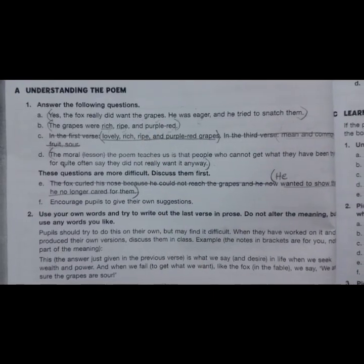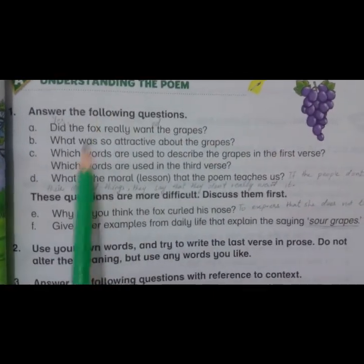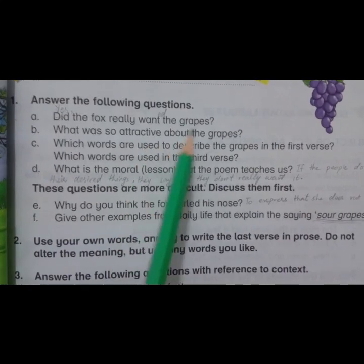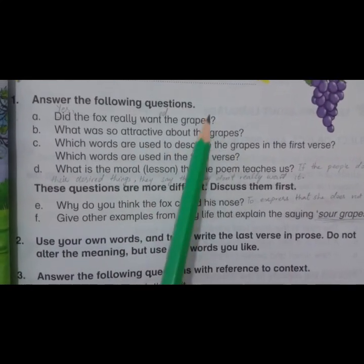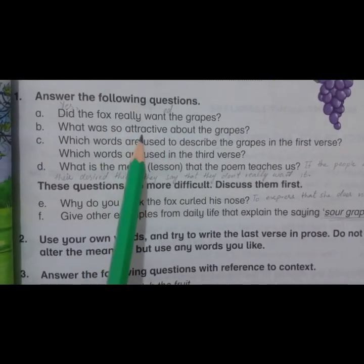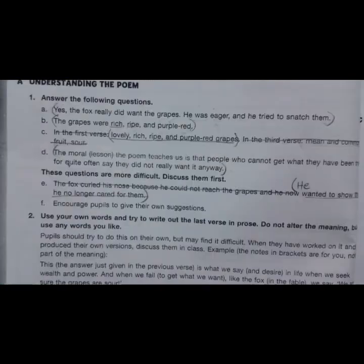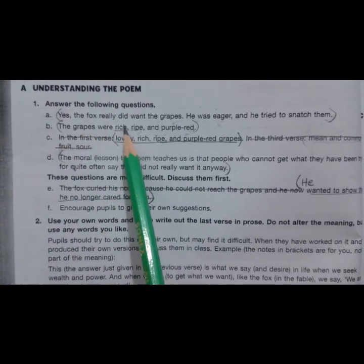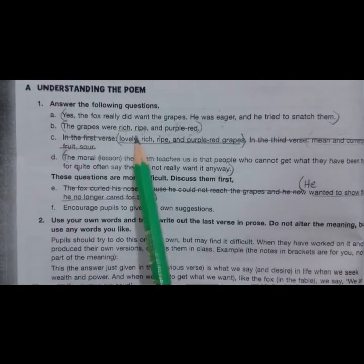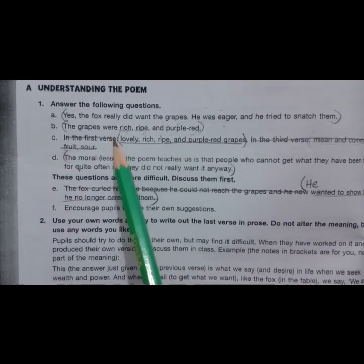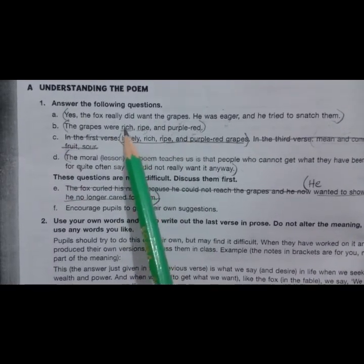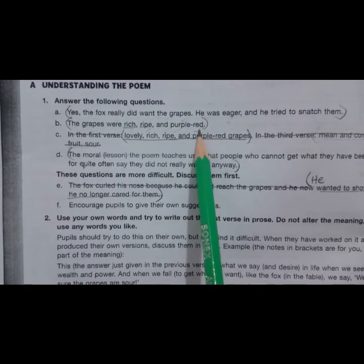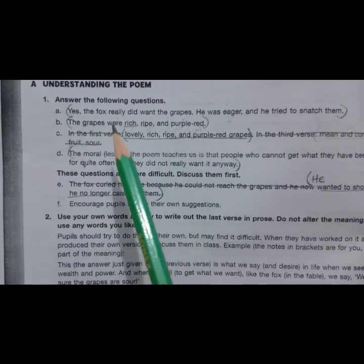Question two: what was so attractive about the grapes? The grapes were rich, ripe, and purple-reddish in color. Because of these qualities — they were so plentiful, ripe, and that rich purple-red color — that's why they were looking so attractive.